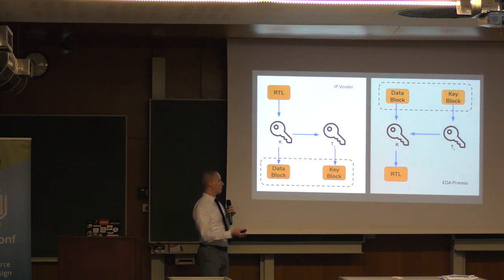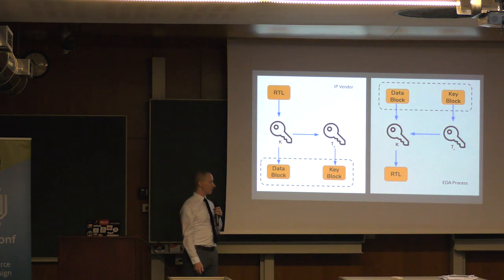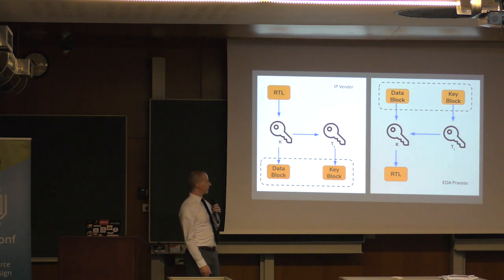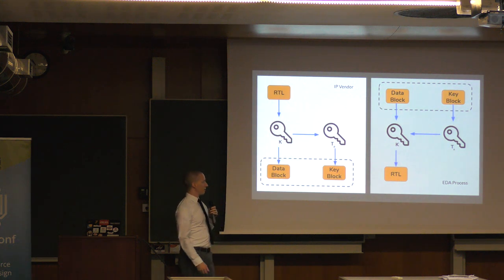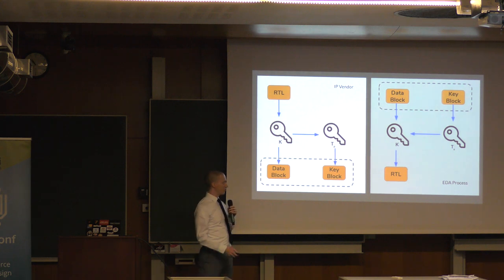There are a number of problems with this scheme. One is that it essentially forces IP vendors to extend the circle of trust to EDA vendors that they probably don't want to. There have definitely been cases where these secret keys leak, and that's no good for IP vendors. Beyond that, this encryption scheme is basically broken — it's possible to back out the plain text RTL from the data block without knowing the key. I don't have time to get into that, but it's a fascinating read; I have some links at the end of the slide deck.